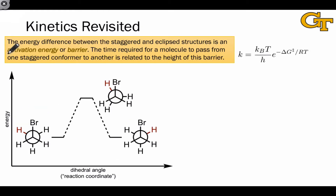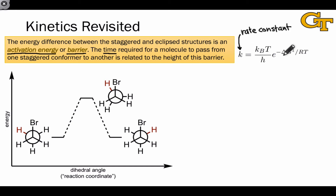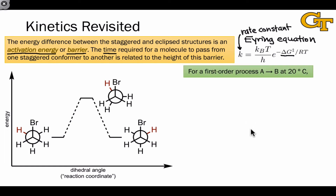The difference in energy between the staggered and eclipsed conformers amounts to an activation energy or activation barrier to rotation. This energy barrier is interesting not just as an energy value, but also because it is related to the time required for an ensemble of molecules to pass from one staggered conformation to another. One way to model that time dependence is to show how the rate constant depends on the activation energy. This particular equation, called the Eyring equation, is one attempt to do this, though we won't use it directly.